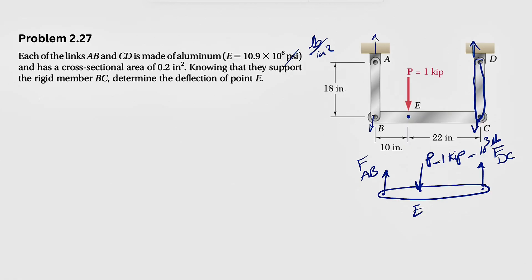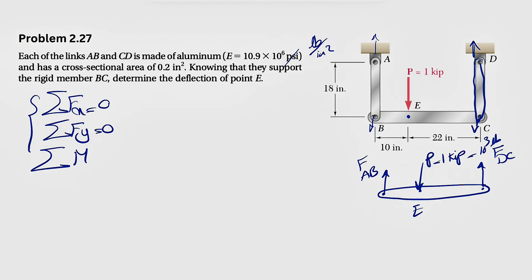We have our equilibrium equations: sum of forces in X equals zero, sum of forces in Y equals zero, and one moment equation about any point we choose. There are no forces in the X direction, so that equation doesn't help. We're left with two unknowns, F_AB and F_DC, and two equations, so we can find all unknowns.